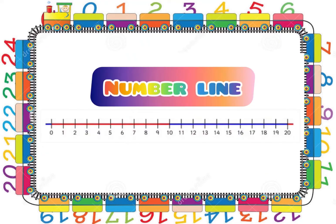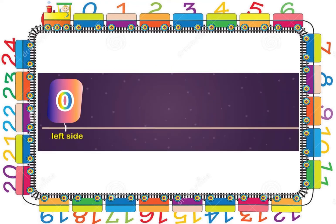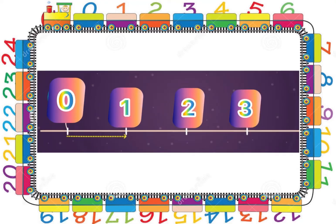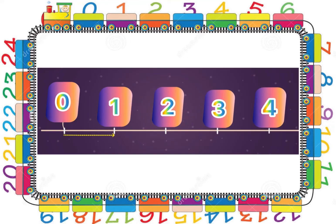This is how a number line looks. We have numbers starting from 0. A mark is made for the number 0 at the left side of a line. From there, counting forward towards the right, the numbers 1, 2, 3, 4 and so on are marked at equal distances.